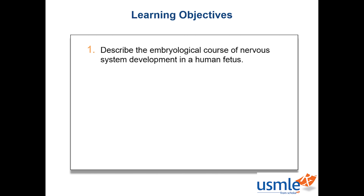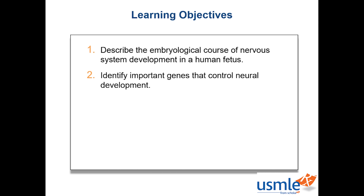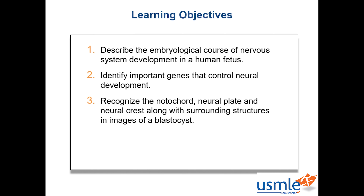The basis of this review will allow you to: 1. Describe the embryological course of nervous system development in a human fetus. 2. Identify important genes that control neural development. 3. Recognize the notochord, neural plate, and neural crest along with surrounding structures in images of a blastocyst.